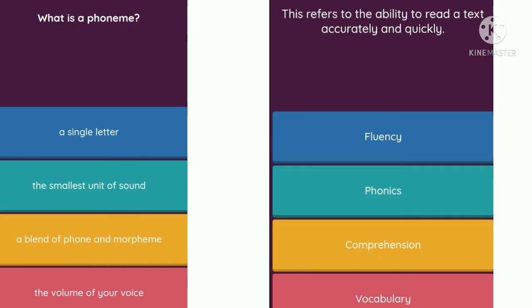Question 7: This refers to the ability to read a text accurately and quickly. Option A — fluency. Option B — phonics. Option C — comprehension. Option D — vocabulary. The correct answer is option A, fluency.